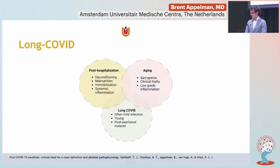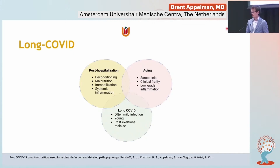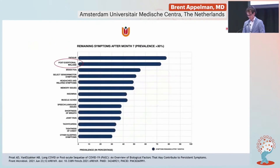Before discussing the data, I want to formalize what we're talking about. When I say Long COVID, I'm not talking about post-hospitalization syndromes, deconditioning, or malnutrition — what you see in intubated patients who've been lying in bed for a month. I'm also not talking about aging patients where sarcopenia and clinical frailty play a role. I'm talking about young patients, mostly female, who often had a very mild infection, were not hospitalized, and have post-exertional malaise.